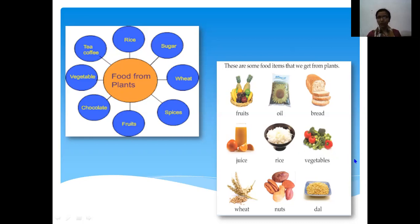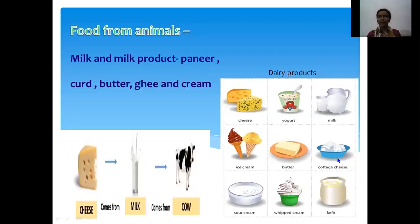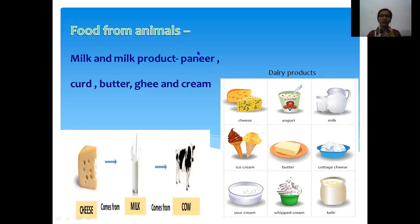Now let's move to the next part: food products which we obtain from animals. As you know, plants are the producers, but animals are not producers. Animals depend on other organisms for food, so animals are known as consumers. They consume food from other sources, either from plants or from other animals.